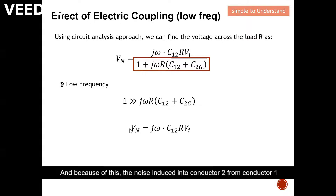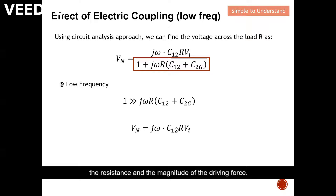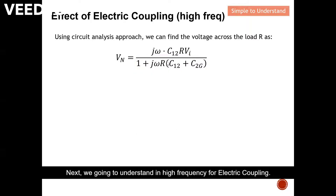Because of this approximation, the noise induced into conductor 2 from conductor 1 is dominated by the remaining term. You can see that it is a function of frequency, the coupling effect from conductor 1 to conductor 2, the resistance, and the magnitude of the driving force.